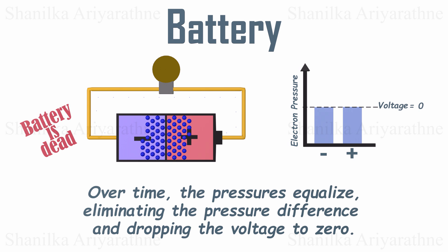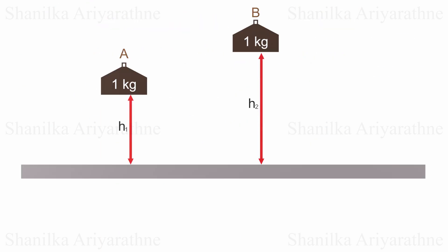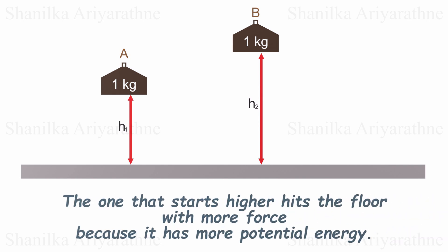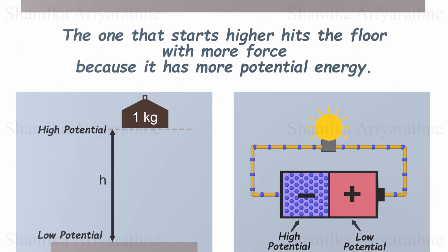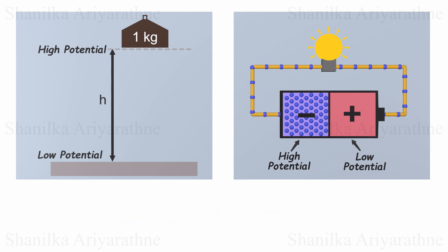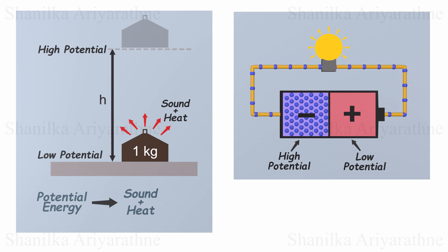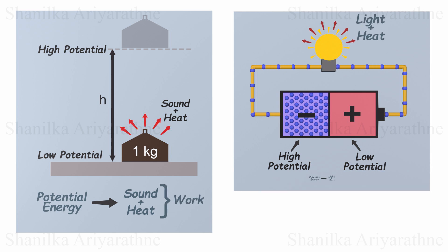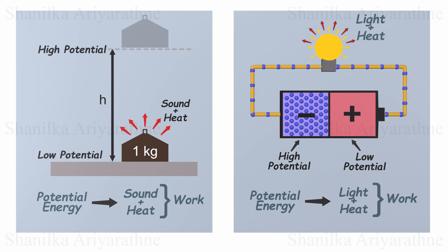Let's zoom in on the concept of voltage. Imagine dropping a one kilogram weight from two different heights. Which one hits the ground with more force? The one that started higher, because it had more potential energy. Voltage works the same way — it's like height for electrons. The greater the voltage, the more energy each electron carries to do useful work. When electrons flow through a light bulb, their electrical energy is converted into light and heat. That energy, the work, comes from the voltage.